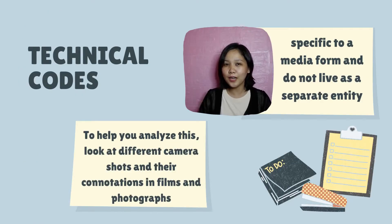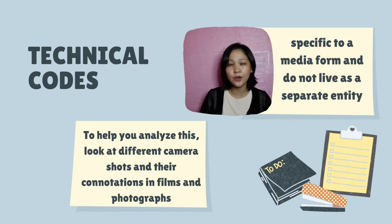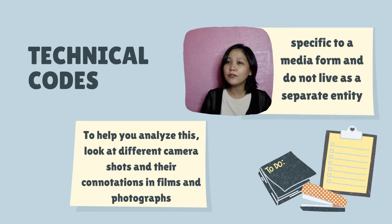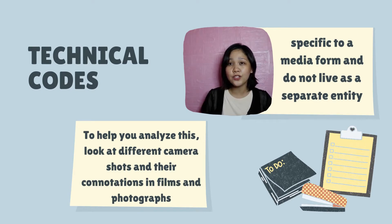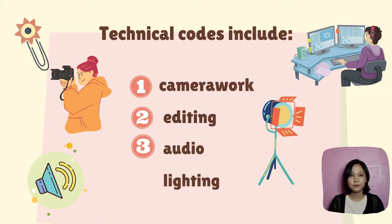Technical codes are the second kind of codes. They are specific to a media form and do not live as a separate entity. To help you analyze this, look at the different camera shots and their connotations in film and photographs. These codes include camera work, editing, audio, and lighting.